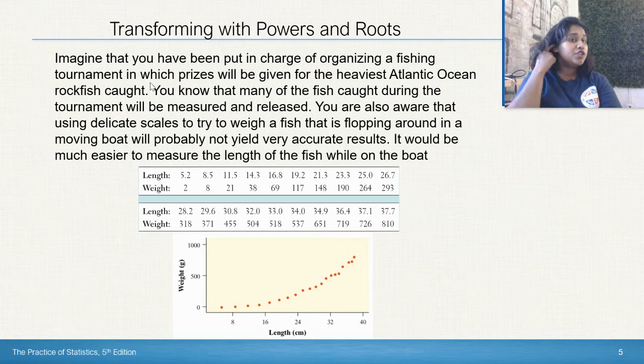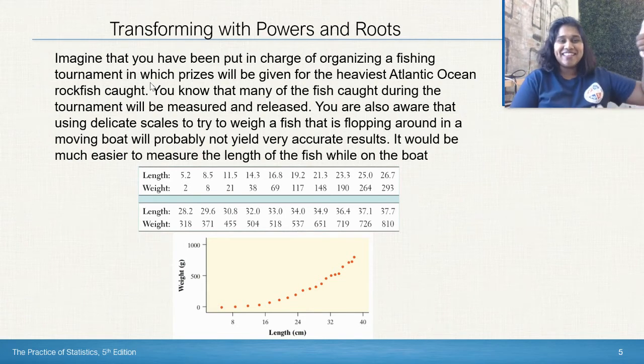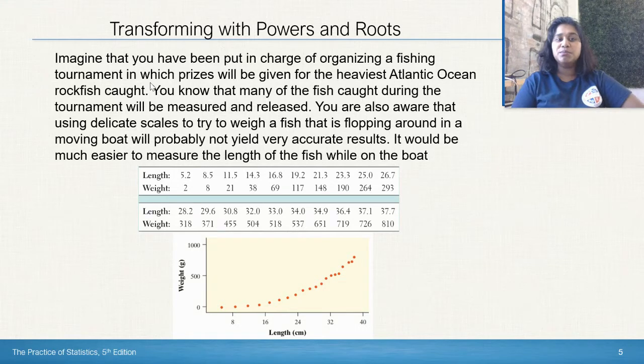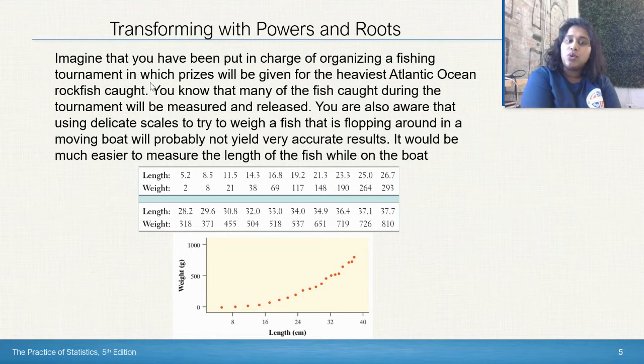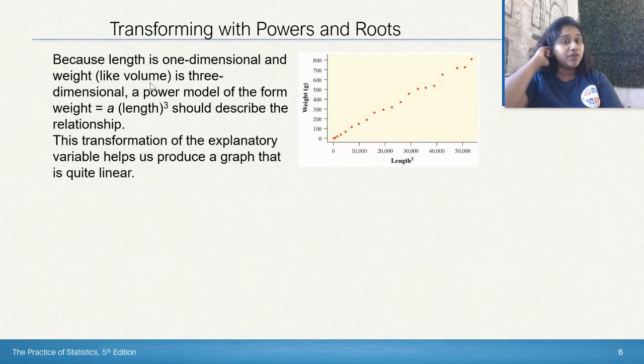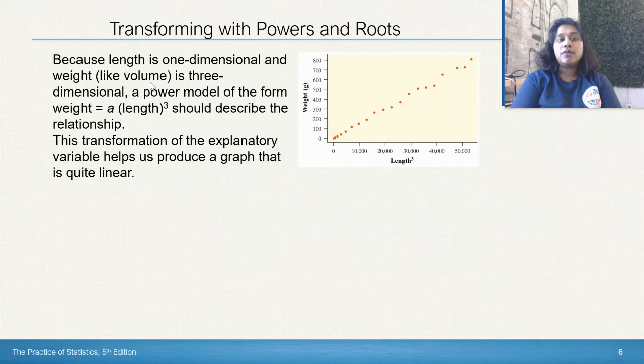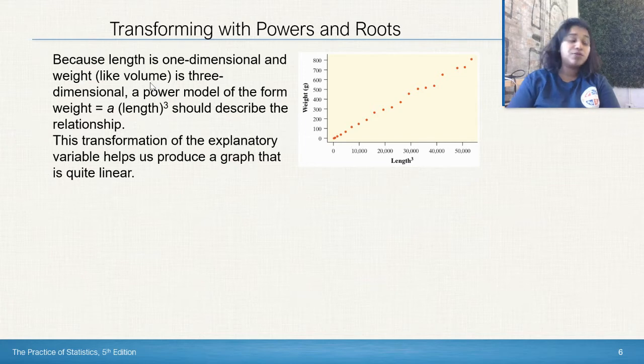Imagine you've been put in charge of organizing a fishing tournament in which prizes will be given to the heaviest Atlantic Ocean rockfish. You know that many of the fish caught during the tournament will be measured and released. You are also aware that using delicate scales to try and weigh a fish that is flopping around in a moving boat will probably not yield very accurate results. It would be much easier to measure the length of the fish while on the boat. We went ahead and did that, and we put those scatter plot points down. Because the length is one-dimensional, and weight like volume happens to be three-dimensional, a power model of the form should describe this relationship, so a times length cubed. This transformation of the explanatory variable helps us produce a graph that's actually quite linear.